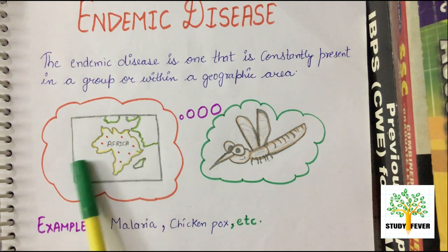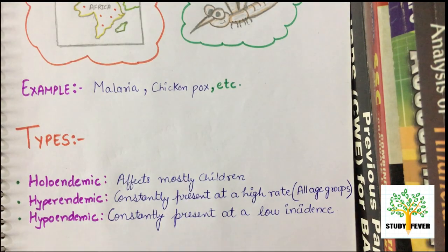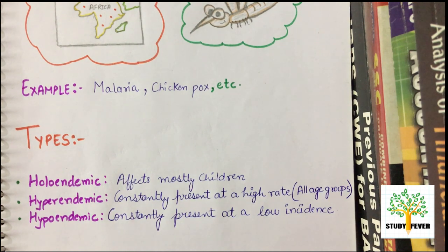We call this condition endemic disease. There are some types. First is holoendemic, which affects mostly children, not adults. Second is hyperendemic, which is constantly present at a high rate and affects all age groups in a particular area. Third is hyperendemic, which is constantly present at a low incidence and affects only a small portion of individuals.